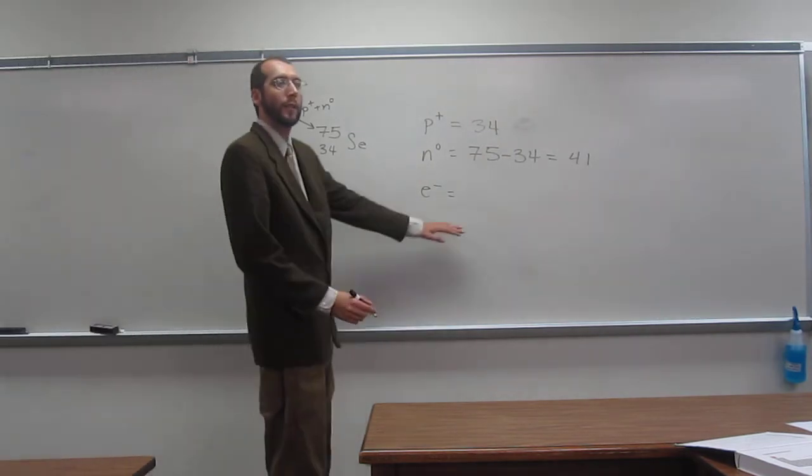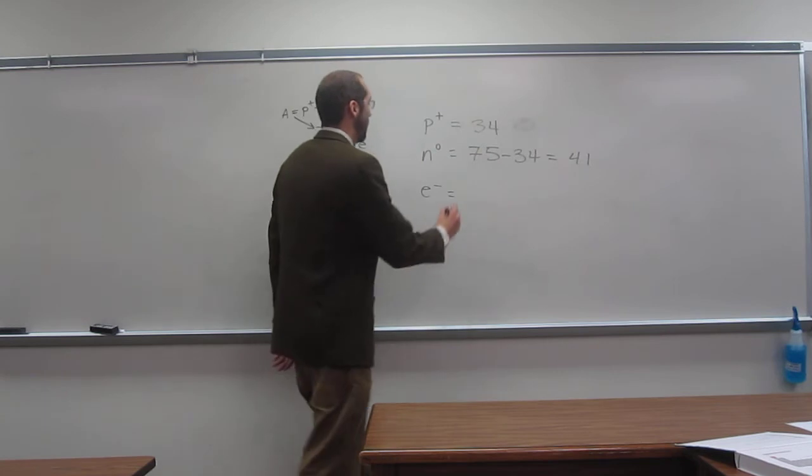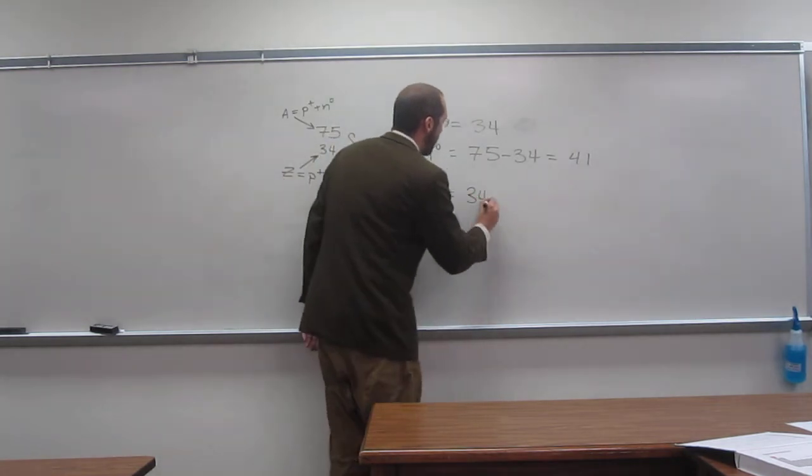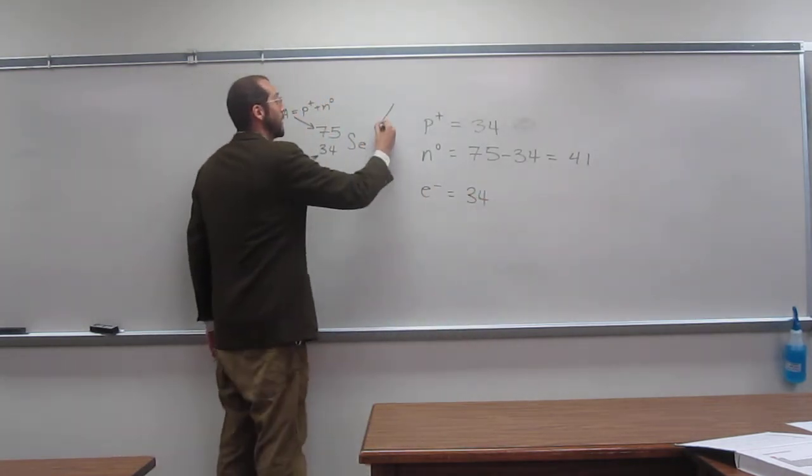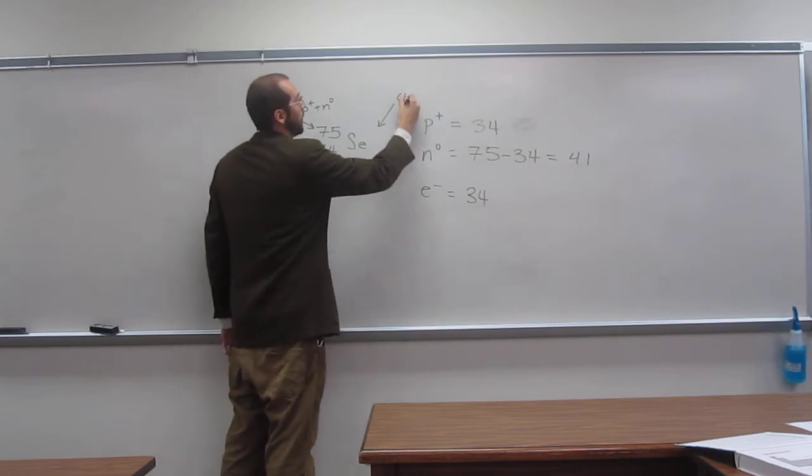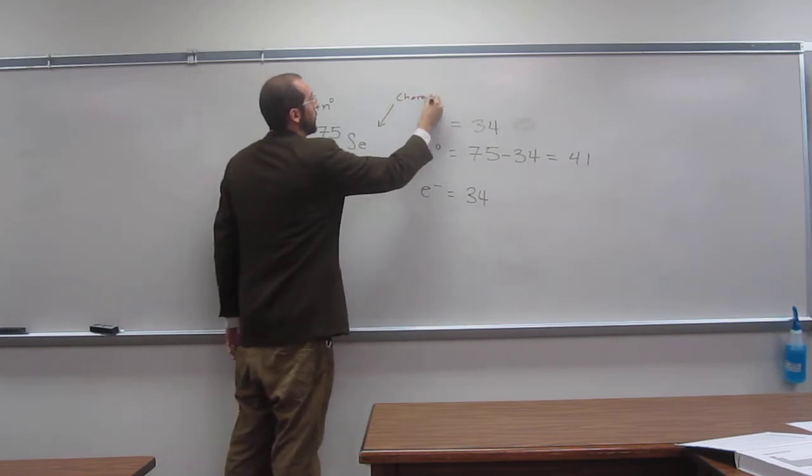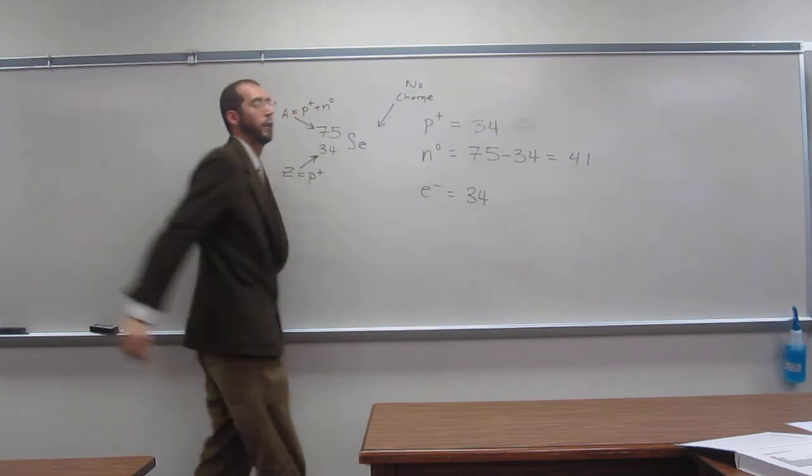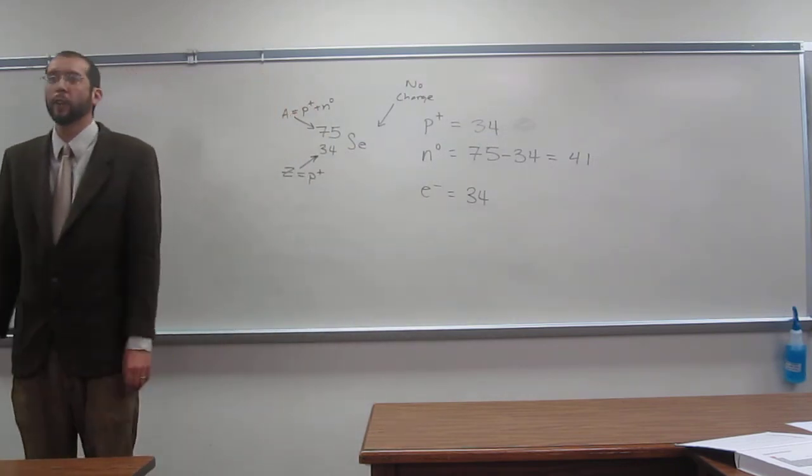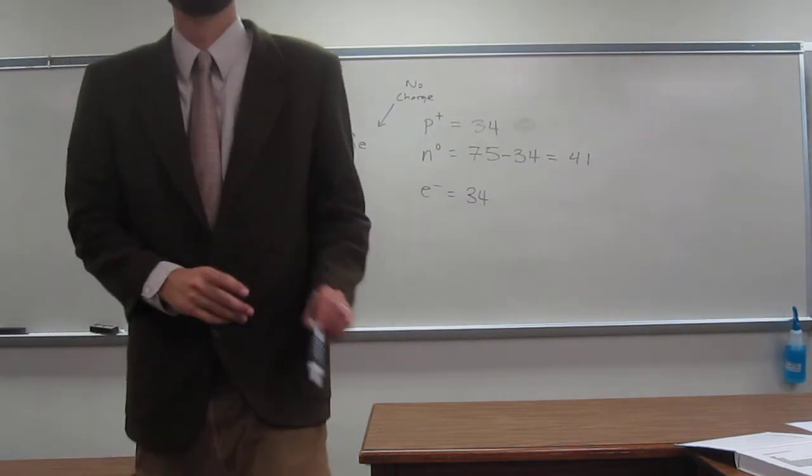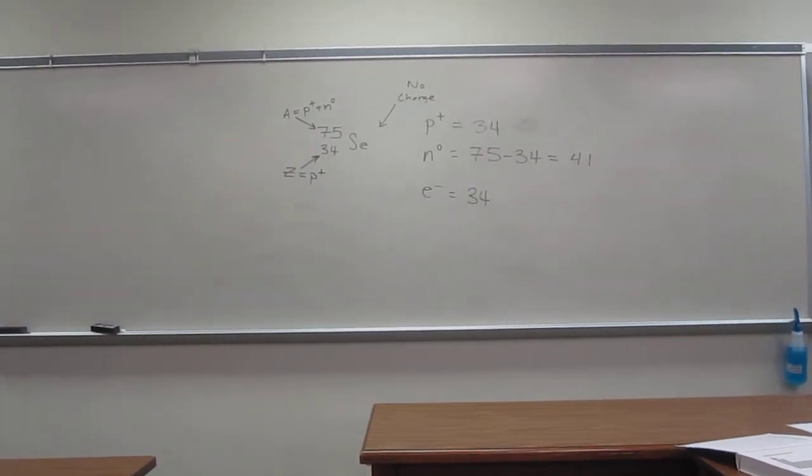And last but not least, the number of electrons is thirty-four. How do you know that? Because it's neutral because there is no charge. Okay, everybody okay with that? Any questions on this one?